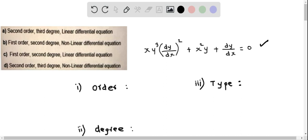So it's basically finding the order, degree, and type of this differential equation, which describes its nature. The order is the highest ordered derivative present in the differential equation. This is 1, because dy by dx is the first order derivative. Here also we have dy by dx quantity squared, but this is still a first order derivative. So the highest derivative of this differential equation is 1, and the order is 1.